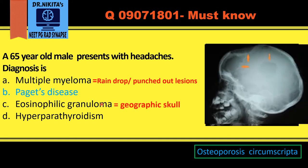Eosinophilic granuloma is geographic skull. There are ill-defined lytic lesions which can have beveled or scalloped edges. That is eosinophilic granuloma.